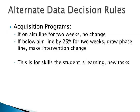I have a couple of alternative decision rules, mainly for acquisition programs — very new skills you might see in an in-home intensive program. If you're remaining on the aim line for two weeks, you're fine. If you're below the aim by 25% for two weeks, you need a phase change and an intervention change. So this is another option for analyzing data.